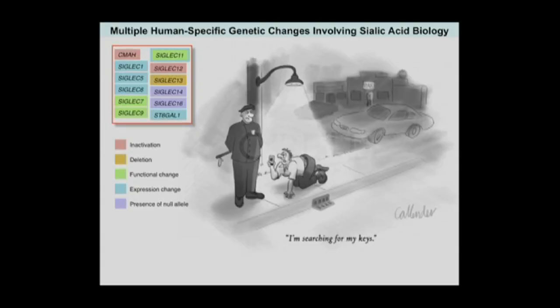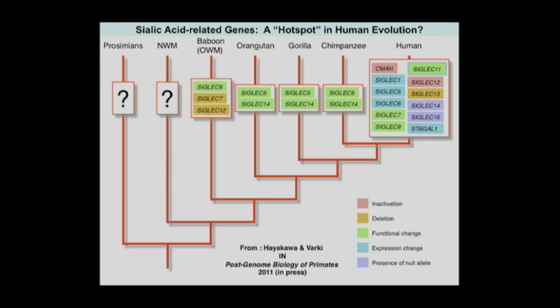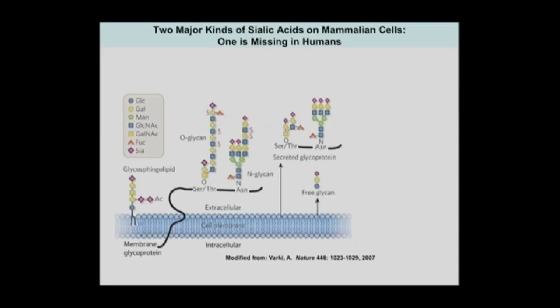The obvious question you may ask: are we like the drunk searching for his keys under the lamppost — looking there because that's where the light is? We are always concerned about this, and to the extent possible, we have been looking at the same family of genes or related genes in other taxa. So far, while the system is rapidly evolving in many taxa, we've only found a limited number of genetic changes there. So we like to think that sialic acid-related genes are a hotspot in human evolution.